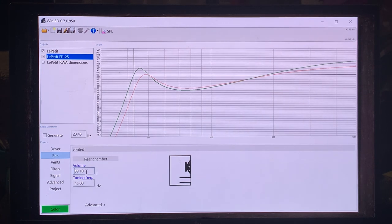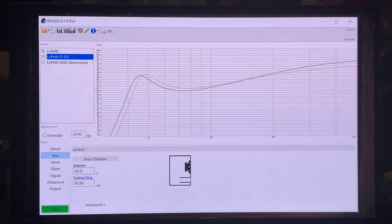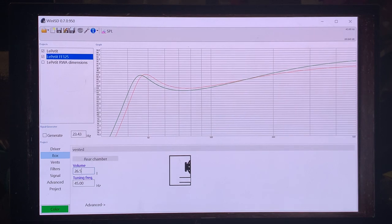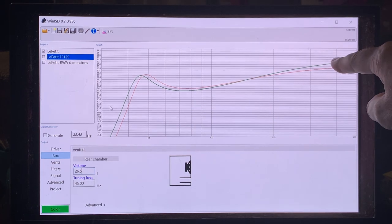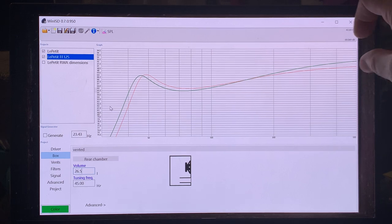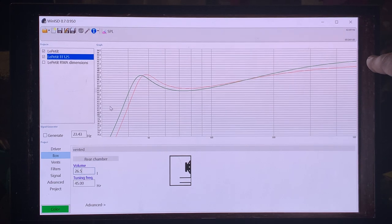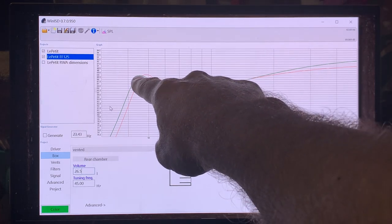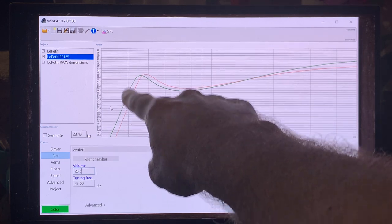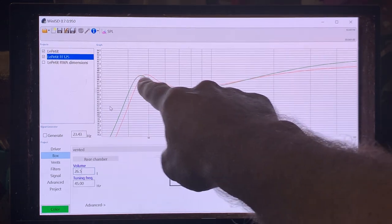So what happens if we change the cabinet volume back to the 26.5 liter, if it's the same cabinet size with the FF125 driver. Then what we are going to get is that in comparison to the original Lepeti, it's going to sound leaner and thinner. Why? Because you are going to have higher upper frequencies, so in the mid-range and higher frequencies, you are going to have 1 dB higher sensitivity, but in the mid-bass it's going to be half a dB lower. And actually it's going to extend lower at the deep bass, but the mid-bass is going to thin out a little bit.